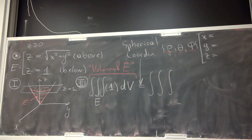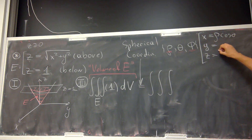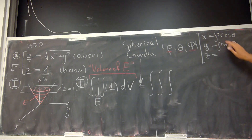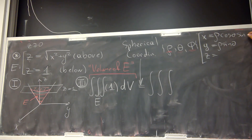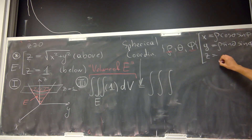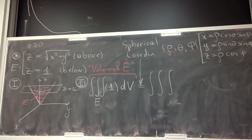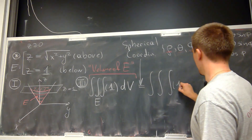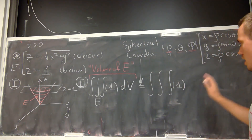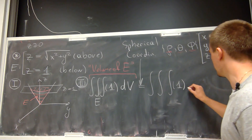The change of variables is: x equals ρ cosine φ times sine θ, y equals ρ sine φ times sine θ — wait, the missing part is sine φ for both variables — and z equals ρ cosine φ. Since my function is 1, I just need to expand dV in terms of dρ dθ dφ.